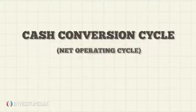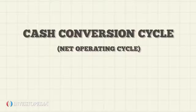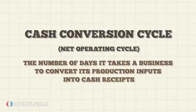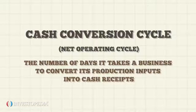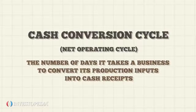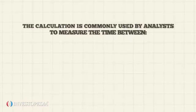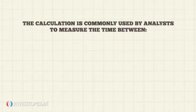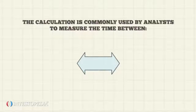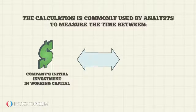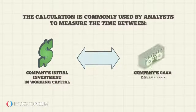Cash conversion cycle, or net operating cycle, is the number of days it takes a business to convert its production inputs into cash receipts. The calculation is commonly used by analysts to measure the time between a company's initial investment in working capital and the company's cash collection.